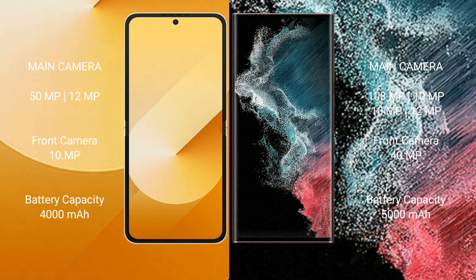The Samsung Galaxy Z Flip 6 rear camera features a dual camera setup: 12MP wide plus 12MP ultra-wide, with a 29MP front camera. The Samsung Galaxy S22 Ultra rear camera features a quad camera setup: 108MP main plus 10MP plus 10MP plus 10MP telephoto lenses, with a 40MP front camera.